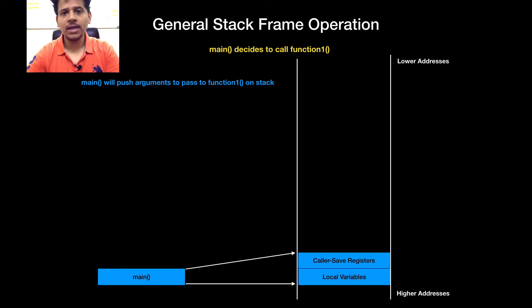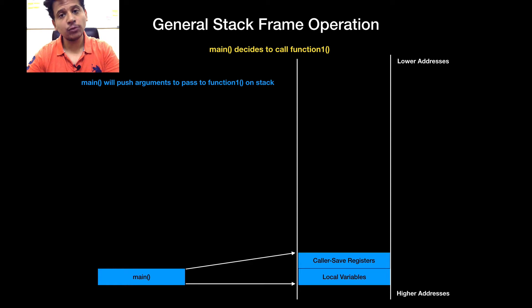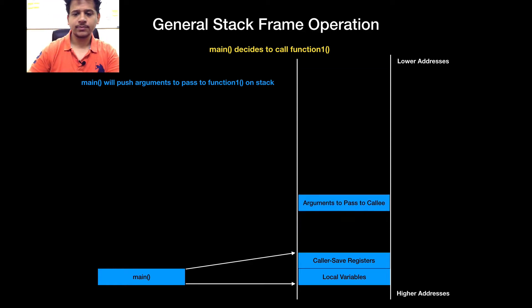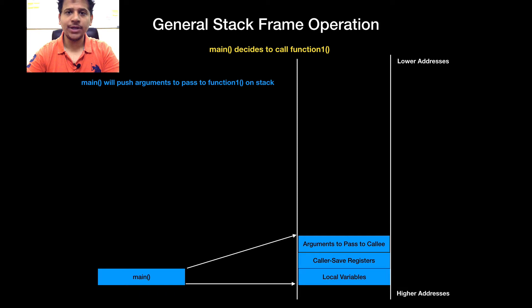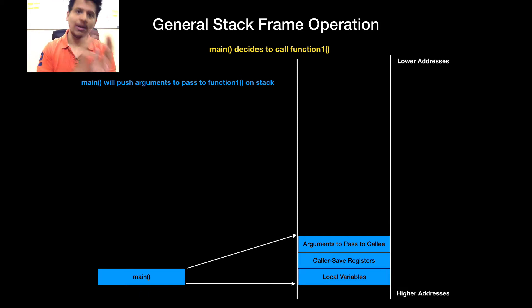Now, if main wants to pass some arguments to function 1, those will get pushed onto the stack. As we saw in the cdecl video, arguments are pushed from right to left.